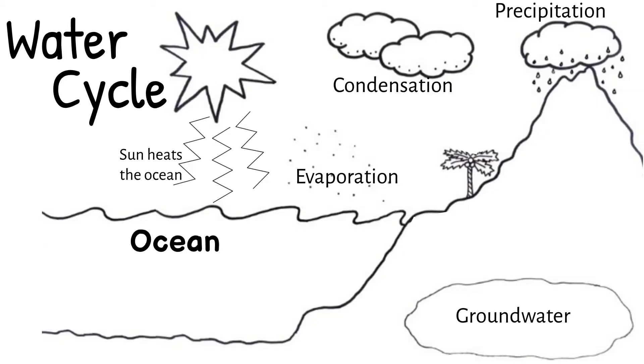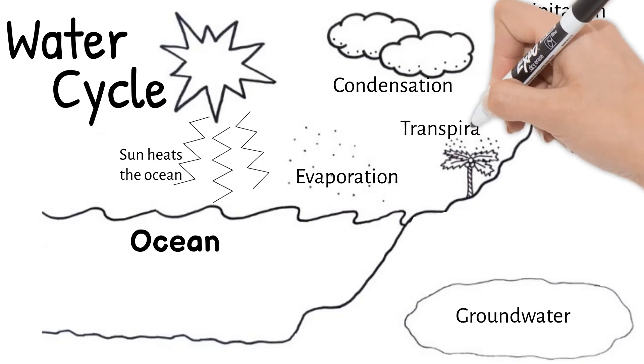At this point in the water cycle, plants are not only absorbing water out of the ground, but they also release water. Water evaporates off of plants and goes into the atmosphere in a process called transpiration.